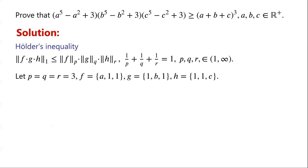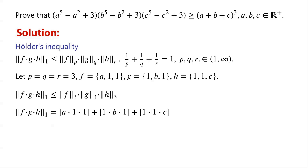Now we let P = Q = R = 3, and define F, G, H as discrete functions taking values (A, 1, 1), (1, B, 1), and (1, 1, C) respectively. The 1-norm of F·G·H becomes |A·1·1| + |1·B·1| + |1·1·C|. Since A, B, C are positive real numbers, the absolute values simplify, giving A + B + C.